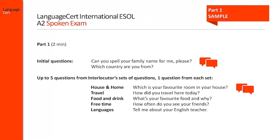Part 1 aims at setting the candidate at ease and eliciting personal information. After eliciting the spelling of the candidate's name and where he or she comes from — questions which are not assessed — the interlocutor might ask a question related to one of the topics, for example house and home. The first assessed question might relate to which is his or her favourite room at home. Then the interlocutor will proceed with a second question taken from a second set.